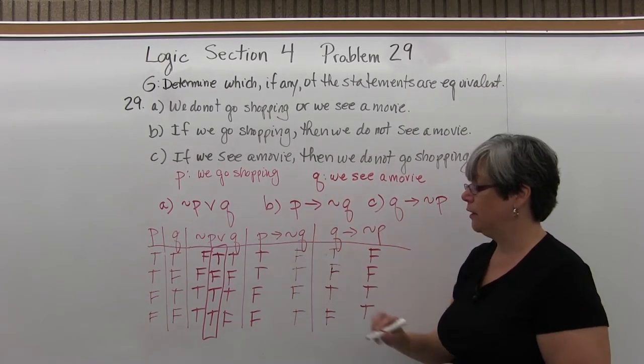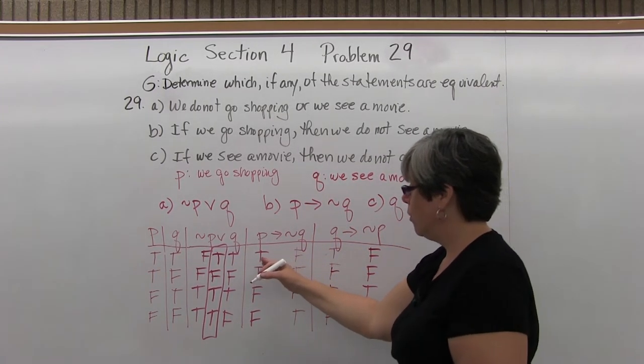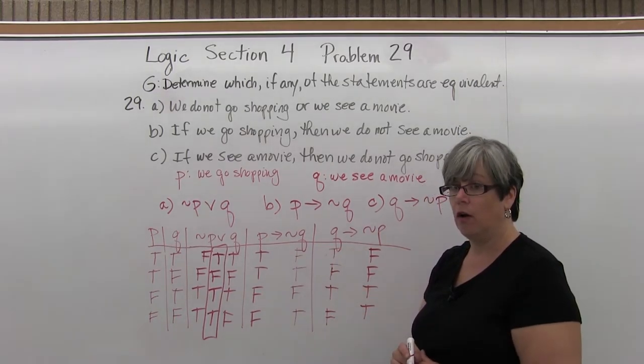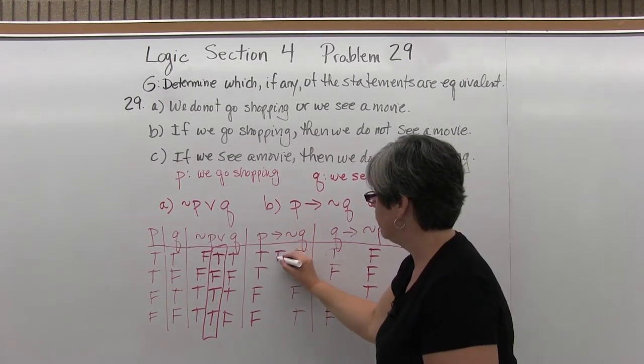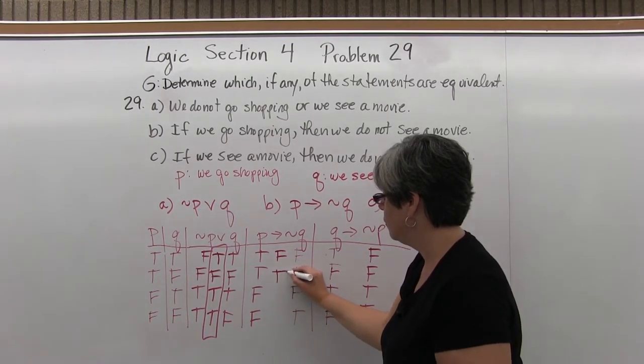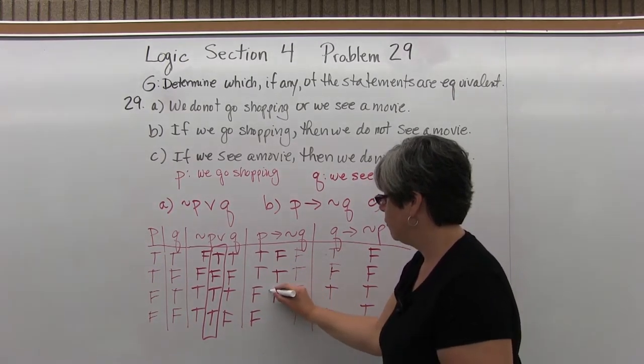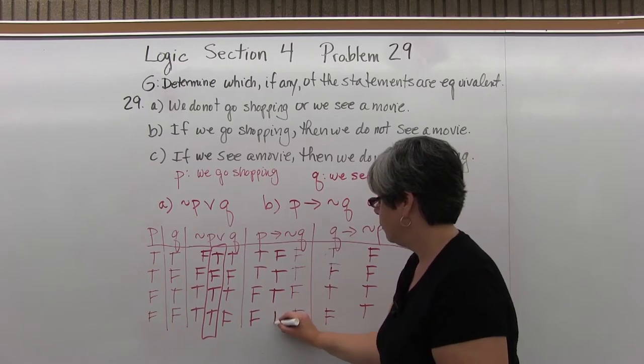Now, if P then not Q. We know only true implies false is false and the rest are true. Here we have true imply false: false. True implies true: true. False imply false: true. False imply true: true.